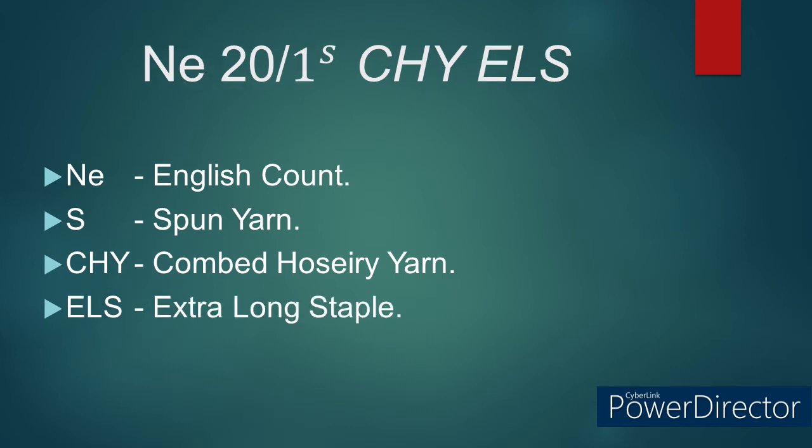Number 3: NE 20/1S CHY ELS. Here NE refers to English count. S refers to spun yarn. CHY refers to combed hosiery yarn. ELS refers to extra long staple yarn — commercially, a yarn manufactured using more than 28 mm of staple length of the fiber is called as extra long staple yarn.